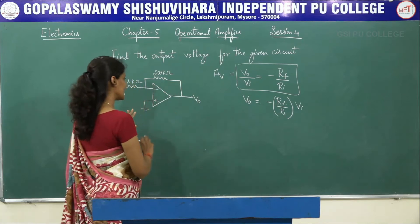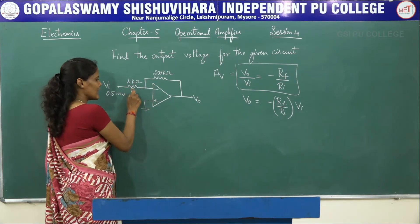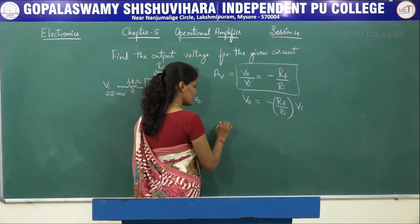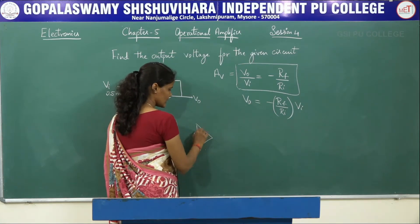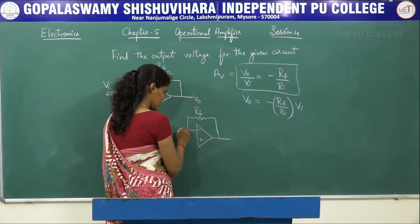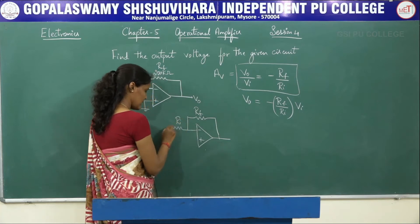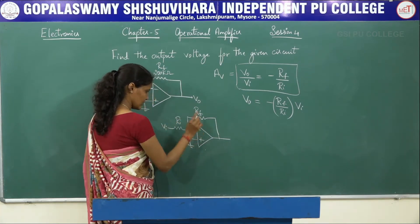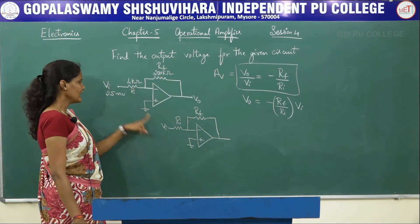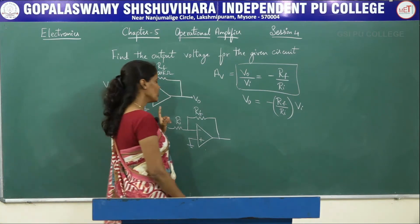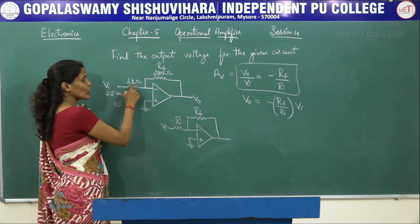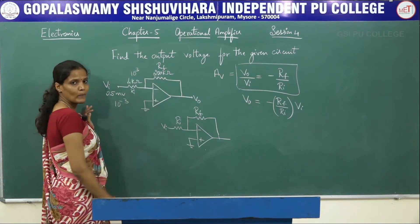In this particular circuit diagram, this resistor is Ri and this is Rf. Rf value is 200 kilo ohms, Ri value is 4 kilo ohms, and the input voltage is 2.5 millivolts. Substituting: V0 = -(200 × 10³) / (4 × 10³) × (2.5 × 10⁻³).